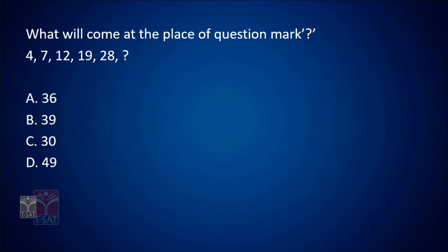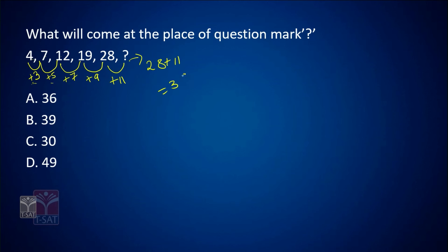What will come at the place of the question mark in the series: 4, 7, 12, 19, 28, ? From 4 to 7 is +3, from 7 to 12 is +5, from 12 to 19 is +7, from 19 to 28 is +9. We are adding consecutive odd numbers: 3, 5, 7, 9. The next odd number is 11, so 28 + 11 = 39. The answer is option B.